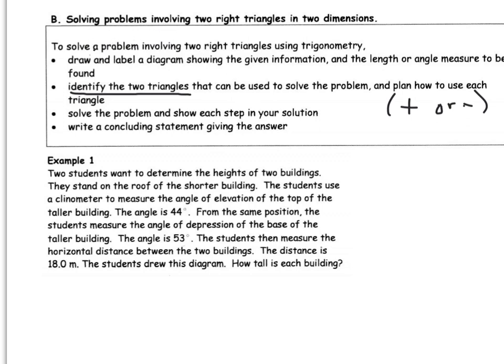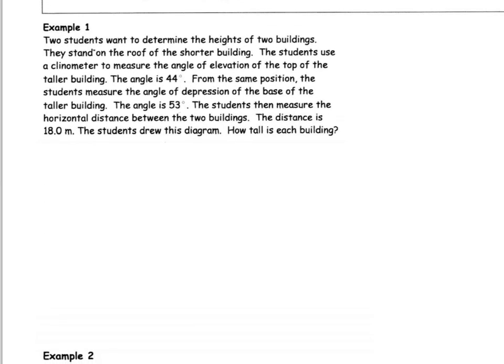So let's look at this first problem. Two students want to determine the heights of two buildings and they stand on the top of a shorter building. So I have a short building and I have a tall building. They use something called a clinometer, that's what you can get an angle of elevation and angle of depression from.